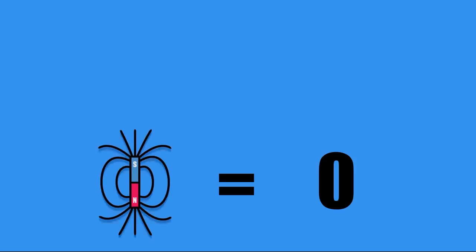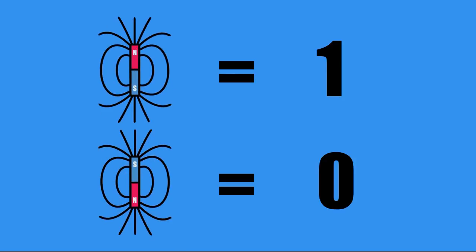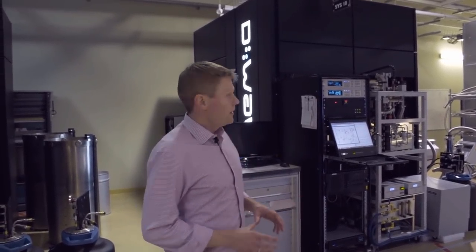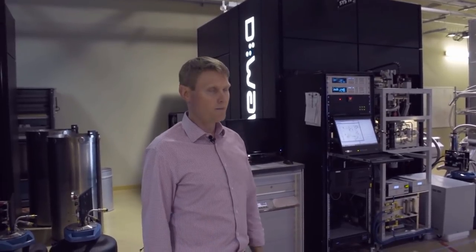The quantum bits in our processor store information in the form of little magnetic fields. The zero and one correspond to a little magnetic spin. The controls over the qubits are all in the form of magnetic fields. So the quantum processor is very sensitive to magnetic noise and the magnetic environment that it sits in. In order to keep that magnetic environment really low, as well as support the ultra-low temperature that it's operating at,